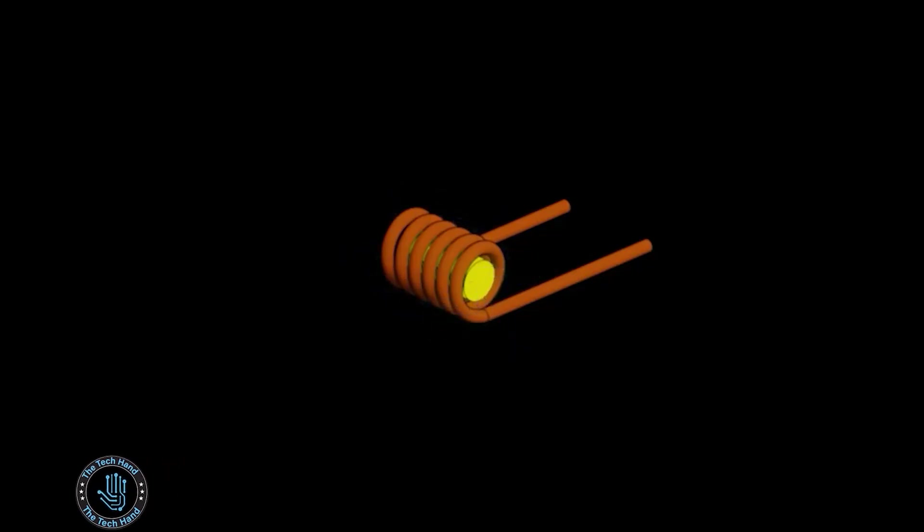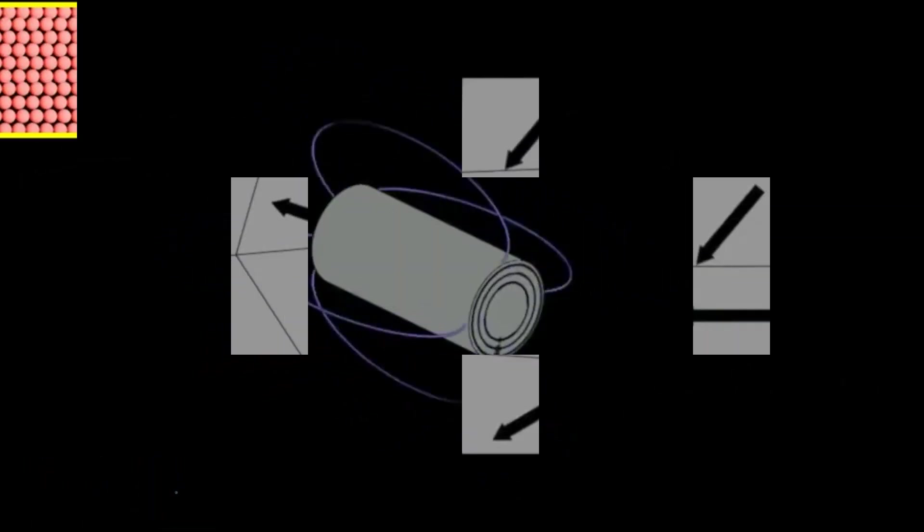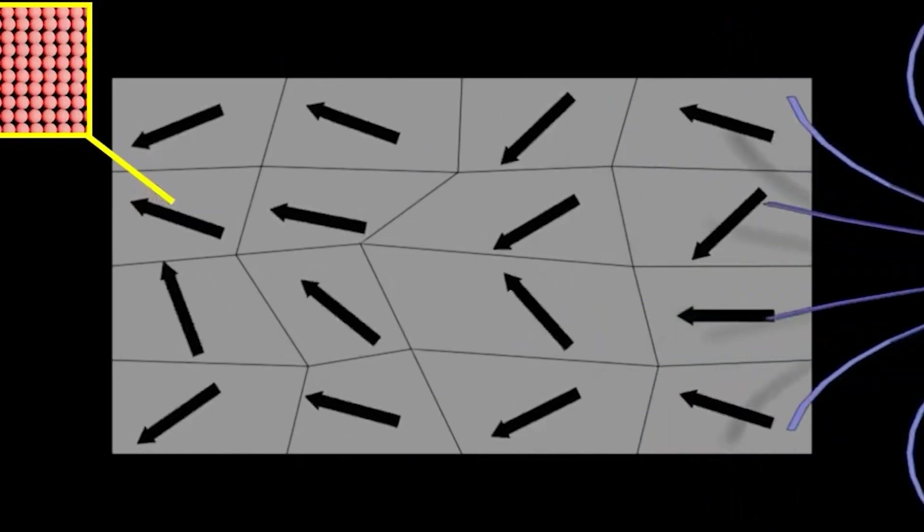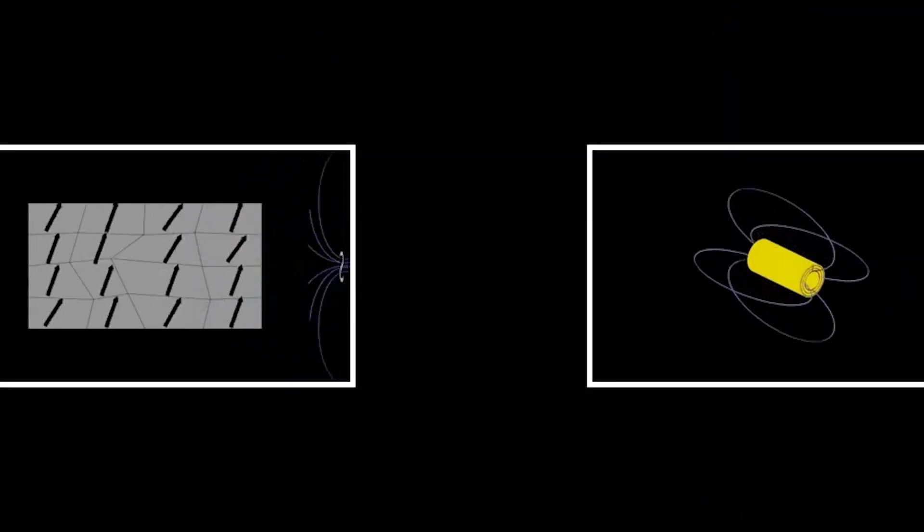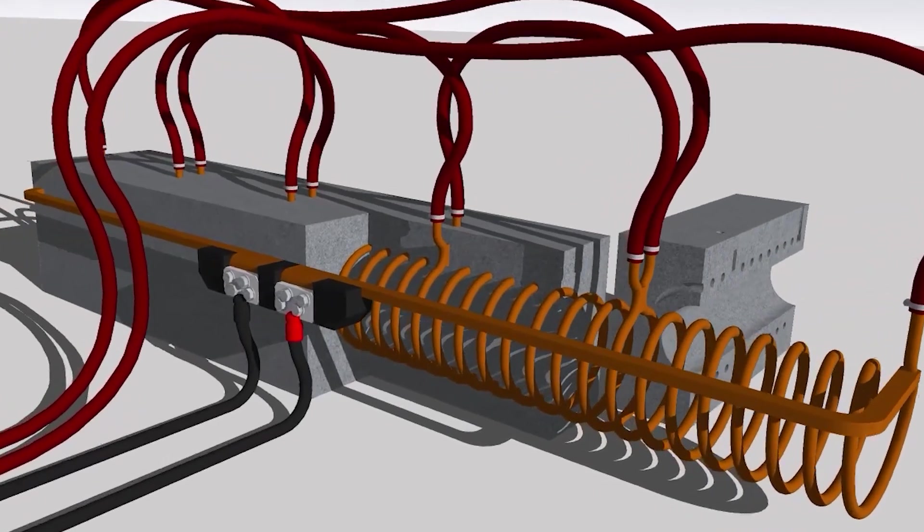Number 1: Induction Heating Machines. Induction heating is a process that uses an alternating current to generate heat in a conductive material. It works by using an electromagnetic field to induce an electric current in the material, which generates heat due to the resistance to the flow of electricity.